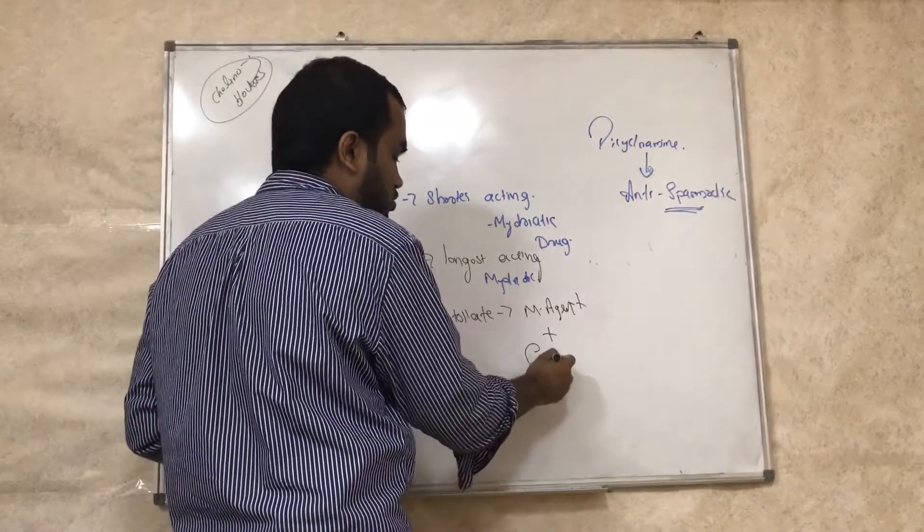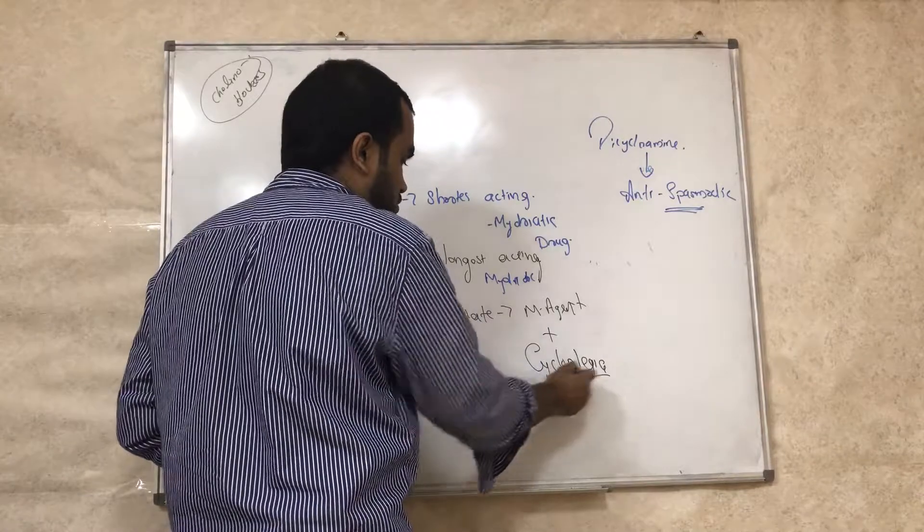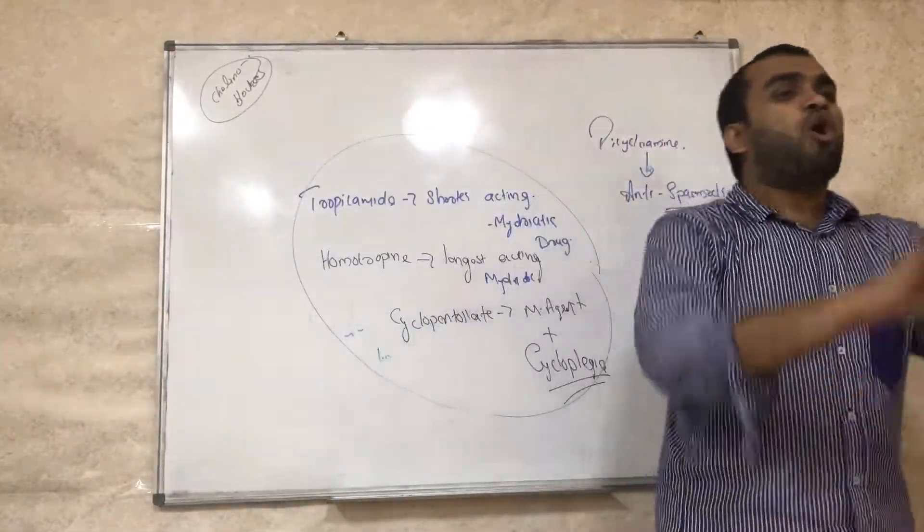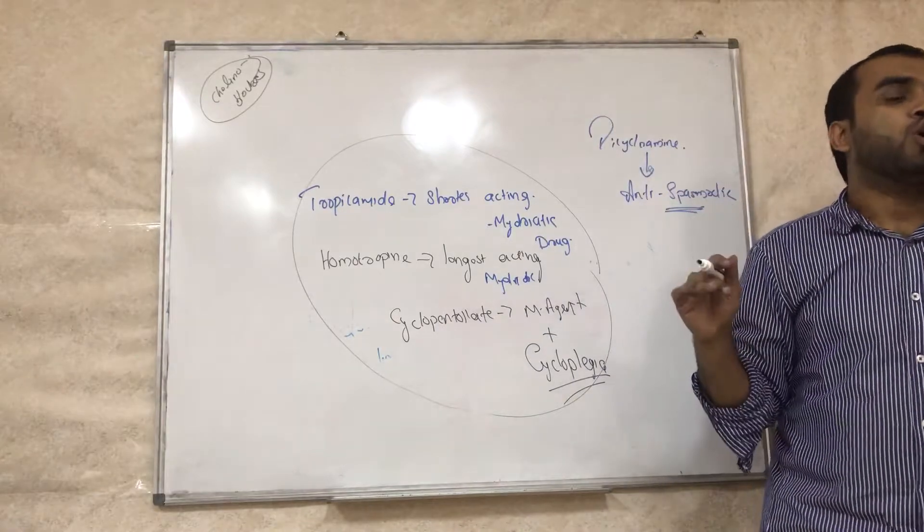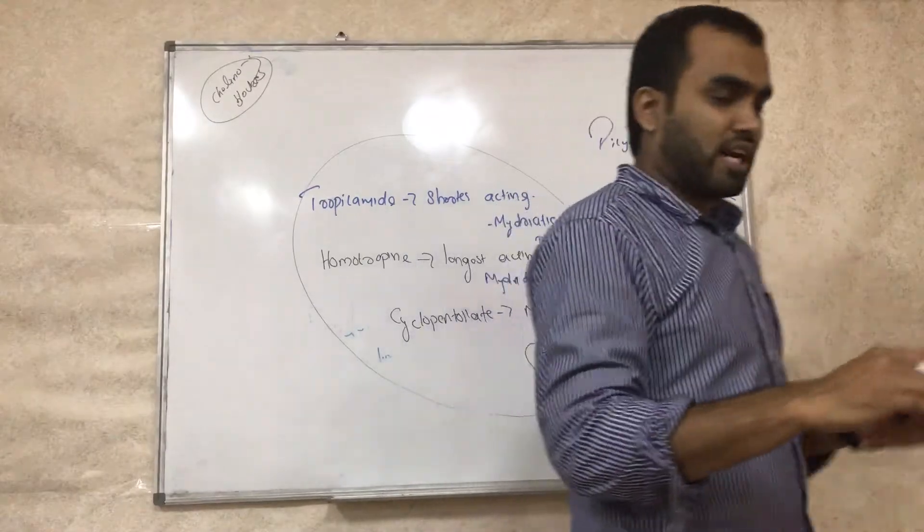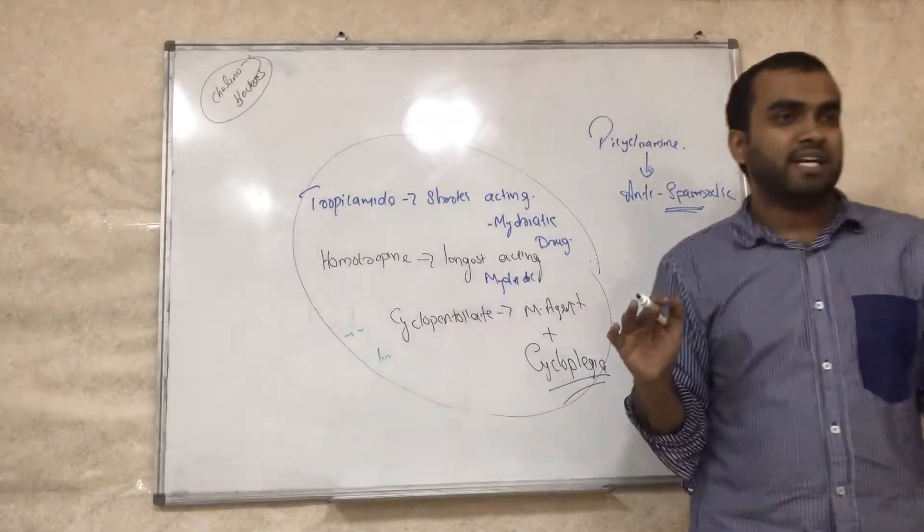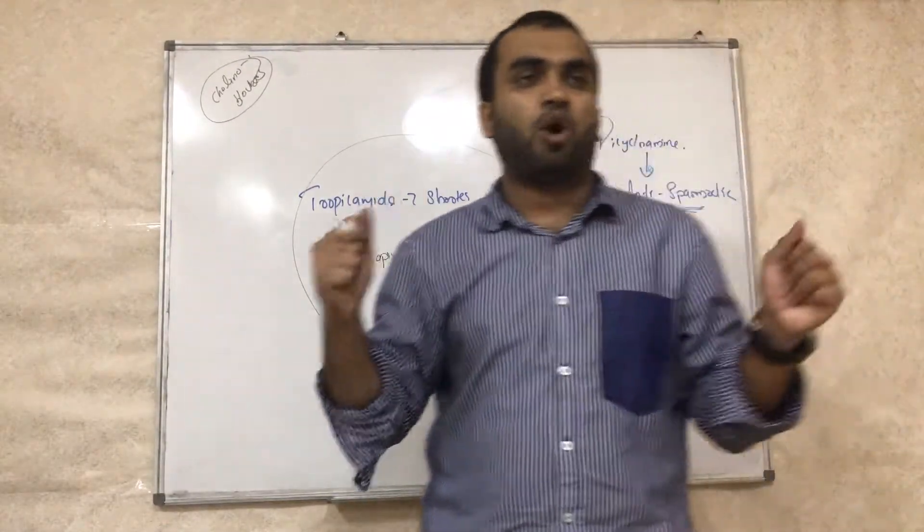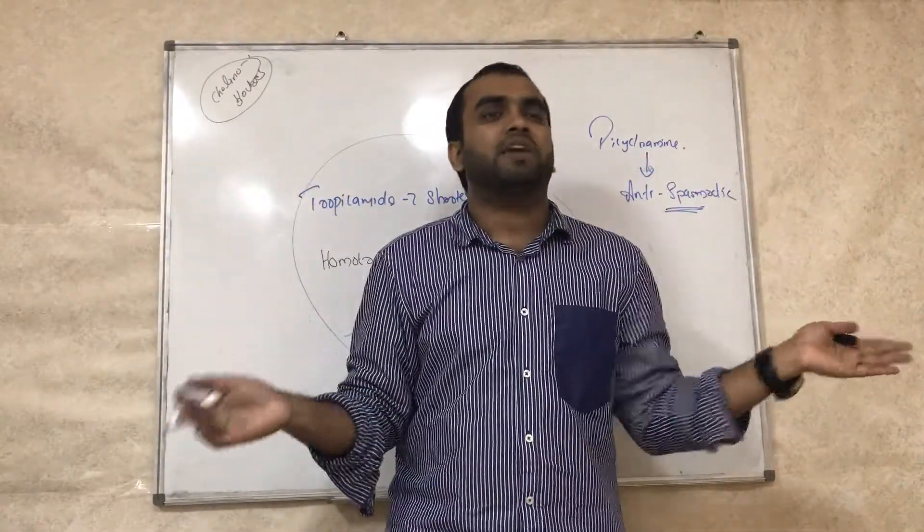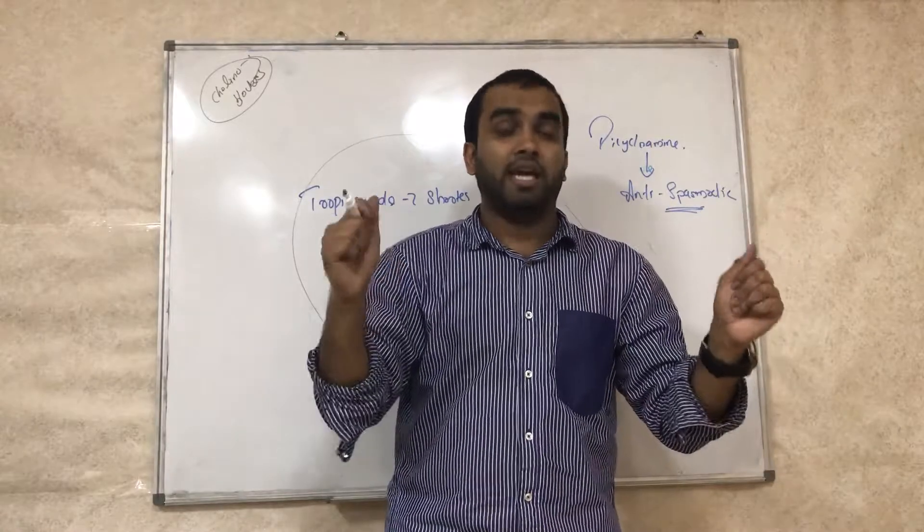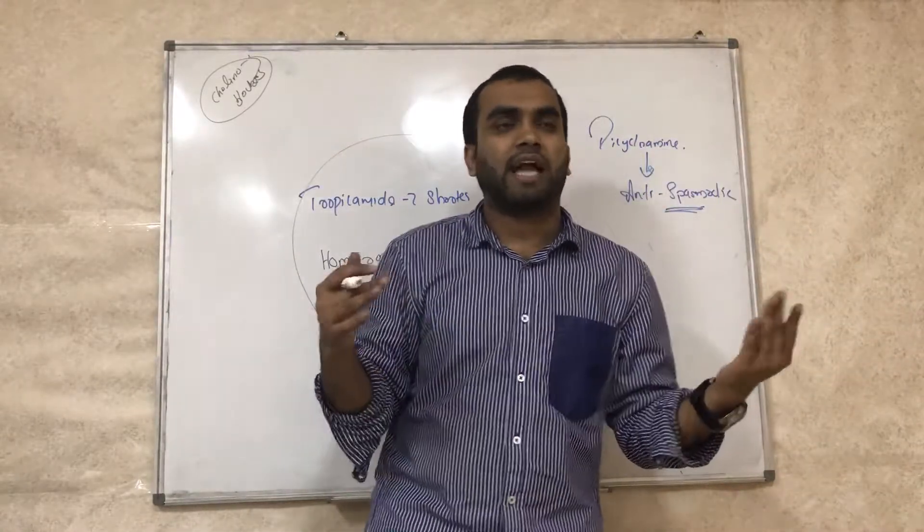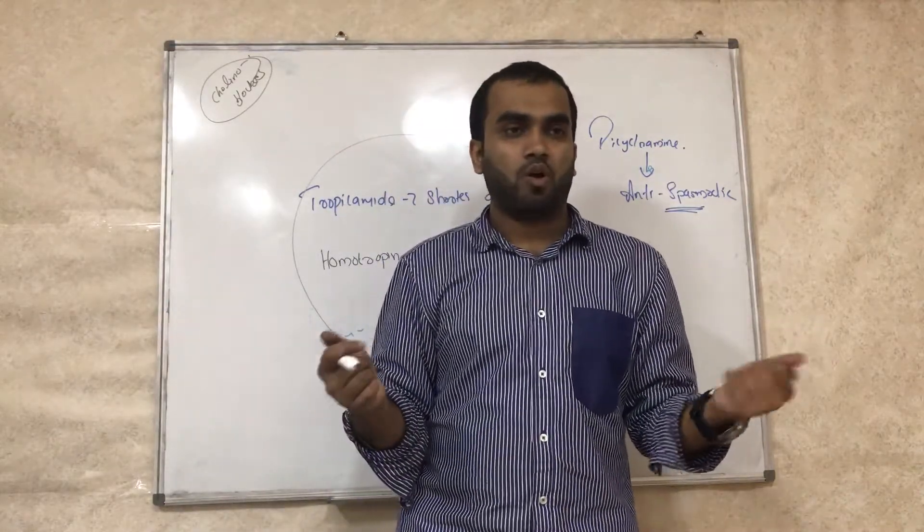So these are all about cholinoblockers which block the parasympathetic system. We studied the classification, we studied how they work, what are the importance of different drugs. Clear? Now we will move to the important topics - we are forgetting our parasympathetic, now we will go to sympathetic. We will study cholinomimetic - sorry, adrenomimetic or sympathomimetic - how the drugs act on sympathetic system. Clear everyone?